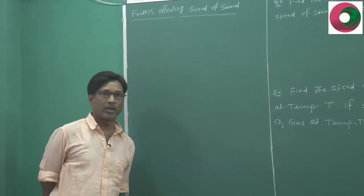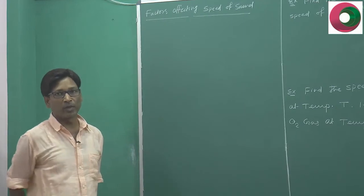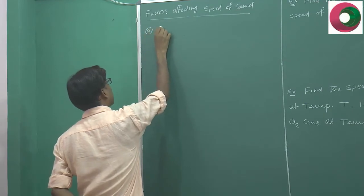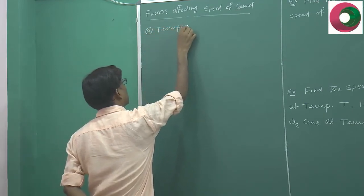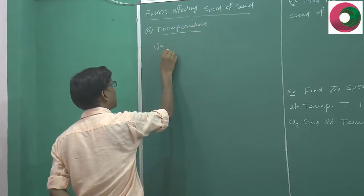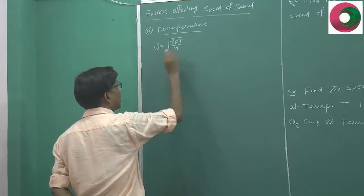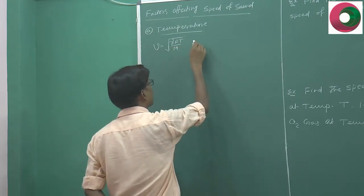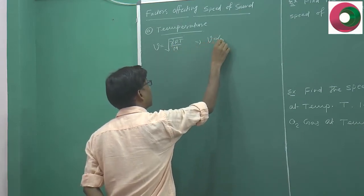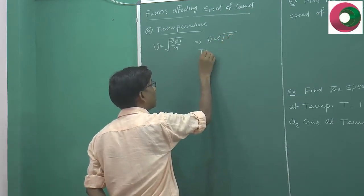We have calculated and derived the speed of sound formula. Now we will see which factors the speed of sound depends on. If we look at the formula, the speed of sound is V = √(γRT/M). Here T is the absolute temperature. So if we fix everything else, then V is proportional to the square root of the absolute temperature T in Kelvin.